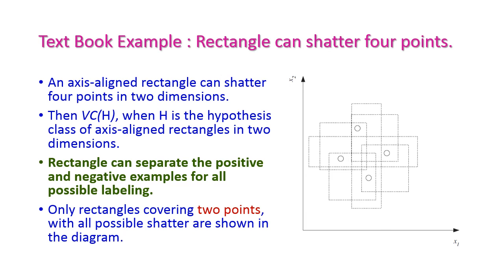This is the textbook example for rectangle shattering four data points A, B, C, D. Within a single diagram we can shatter all four data points. The first rectangle has A and C positive and B and D negative — inside the rectangle are positive, outside are negative. The second rectangle has B and D positive, A and C negative. The third rectangle has A and B positive, C and D negative. The fourth rectangle has B and C positive, A and D negative. The fifth rectangle has C and D positive, A and B negative. The sixth rectangle has A and D positive, B and C negative.